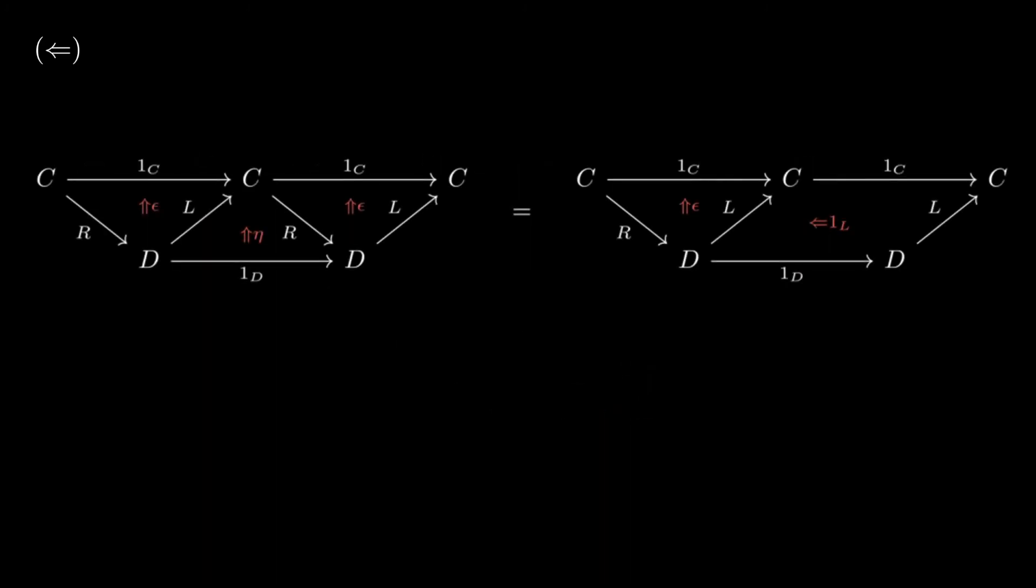As you can probably see where this is going, removing epsilon from both sides of the equality yields the other triangle identity, and we're done.